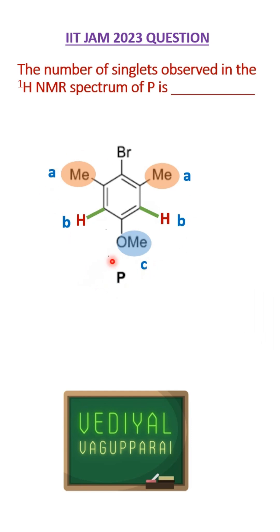And all these three types of protons do not have neighboring protons. So the methyl doesn't have a neighboring proton. Likewise, the others. So all the three signals will be singlets.